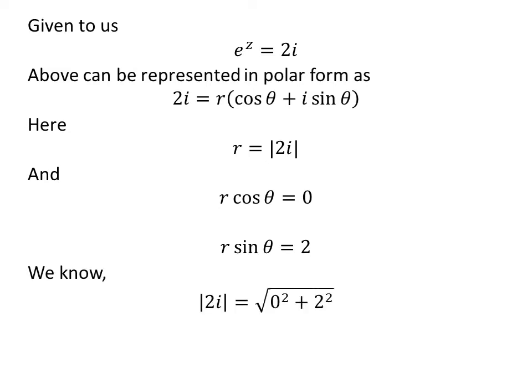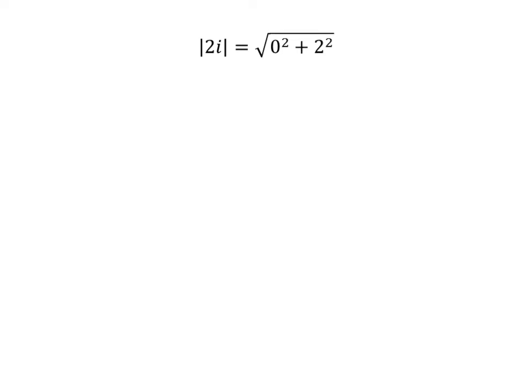As per the definition, modulus of 2 times iota is equal to the square root of the square of 0 plus the square of 2. This implies modulus of 2 times iota is equal to 2, which is equal to R.